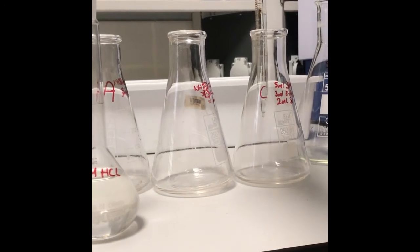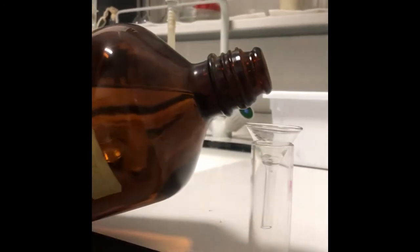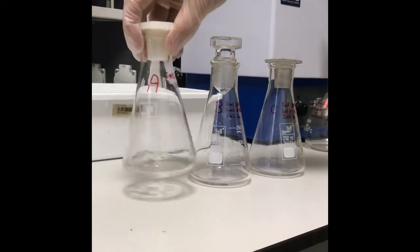Before starting the iteration, three Erlenmeyer flasks are labeled as A, B, and C.